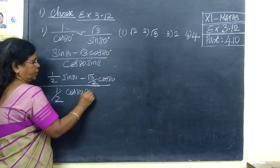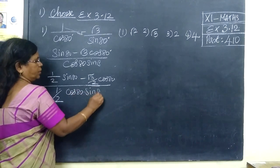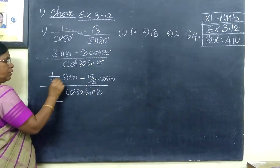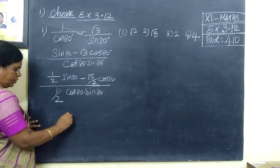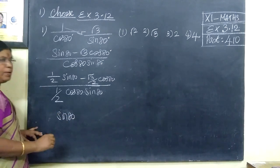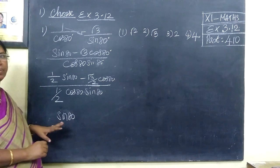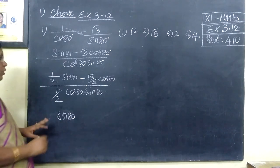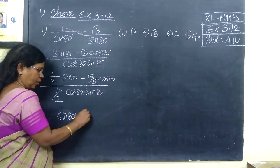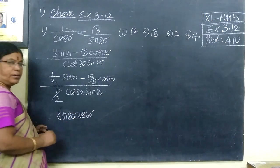Then root 3 by 2 cos 80. Here sin 80, then cos 80, sin 80.